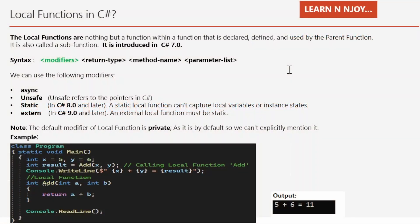Let's get started with local functions in C#. Local functions are nothing but a function within a function that is declared, defined, and used by the parent function. It's also called a sub-function and was introduced in C# 7.0.